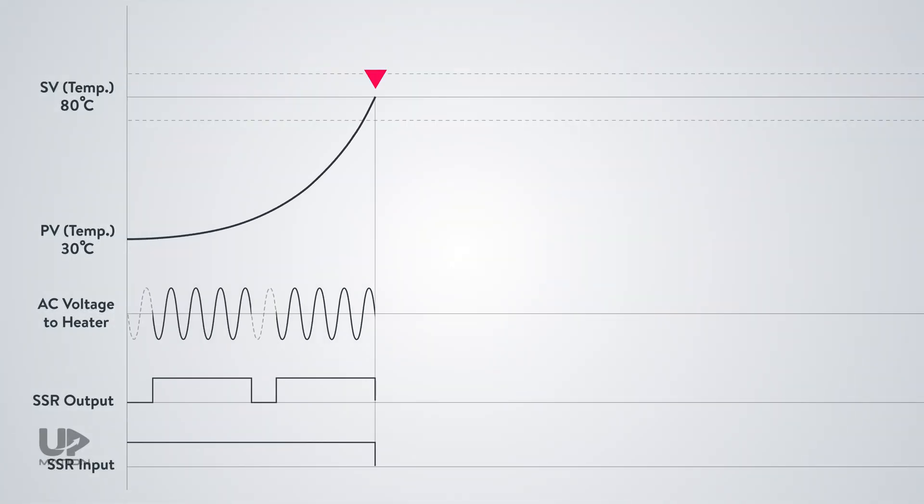When the temperature reaches the set point value, which is 80 degrees centigrade, the controller turns its output off. Therefore, logically, the temperature should be reduced, as the heater is turned off. But guess what?